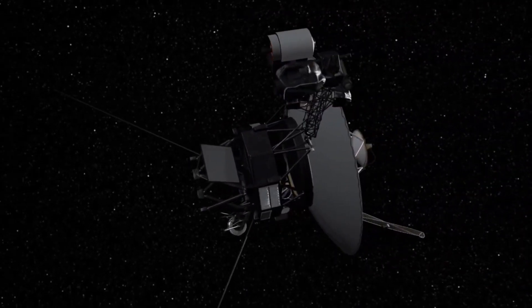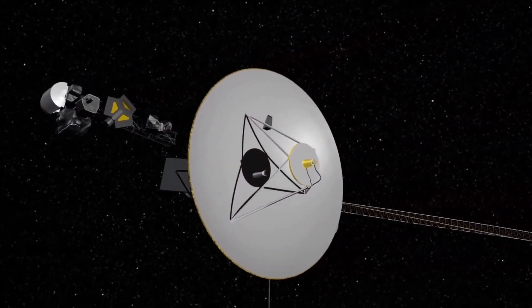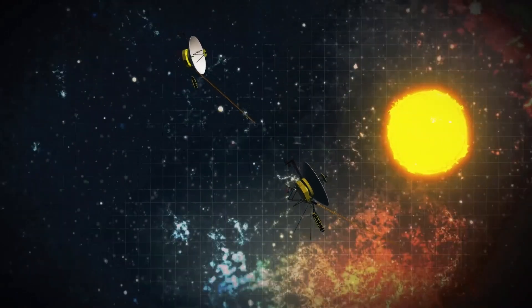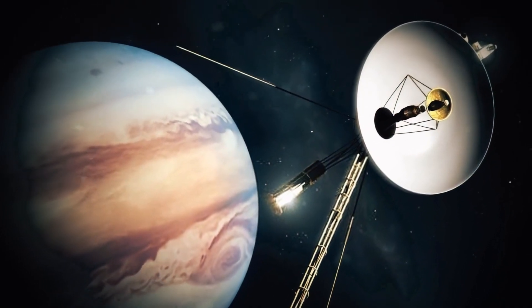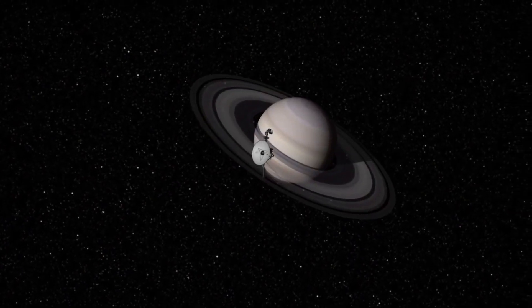On August 25, 2012, Voyager 1 became the first man-made object to exit the solar system and enter interstellar space. A few years later, it was confirmed that Voyager 2 also entered interstellar space in 2018.